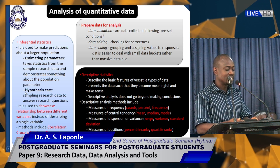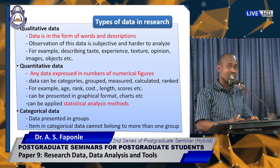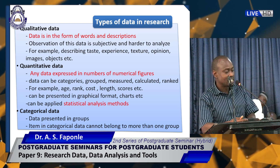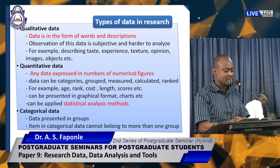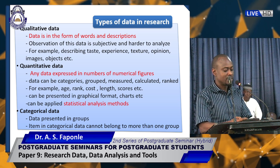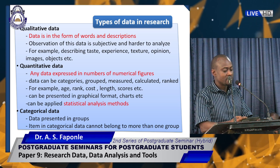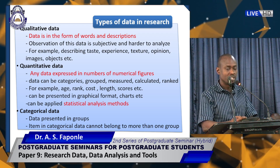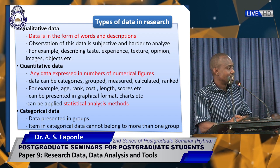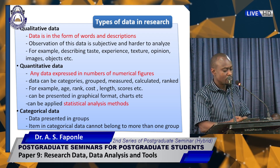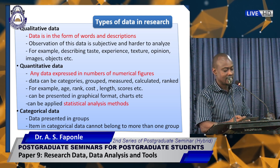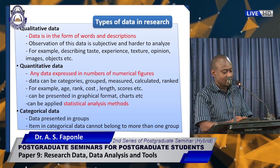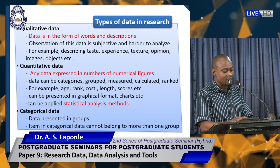There are also types of data. We have qualitative data, quantitative data, and categorical data. Qualitative data are forms of words and descriptions — observations of this data are subjective and harder to analyze. Examples include how we describe taste, experience, texture, opinion, images, and objects. Quantitative data are data expressed in numbers or numerical figures. They can be categorized, grouped, measured, calculated, or ranked. Examples include age, rank, cost, length, and scores.